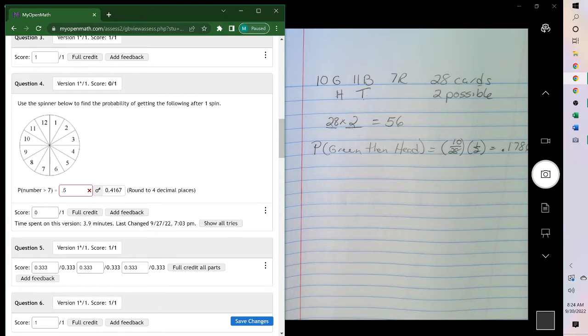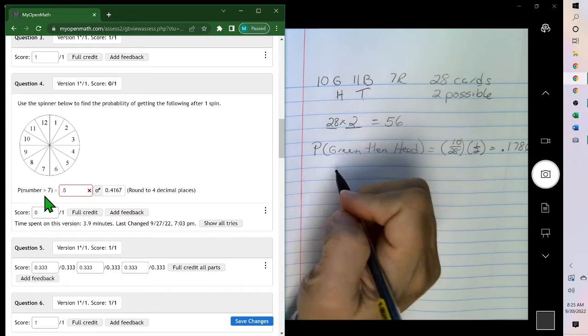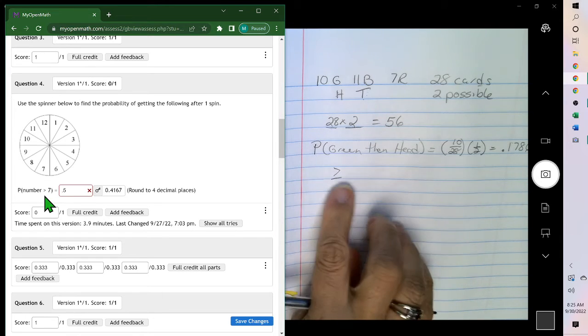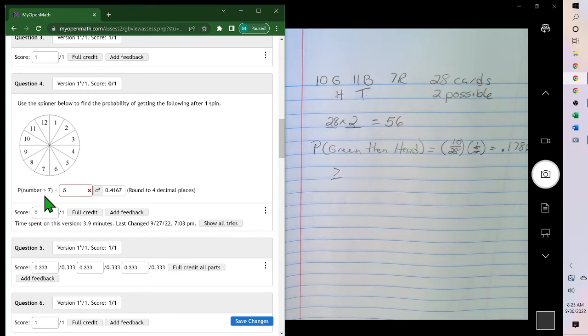Using the spinner to find the probability of getting the following after one spin. A number greater than 7. So greater than 7 means we're not including it because it doesn't have the equal to part there. To be including the 7, it would have an equal to here.